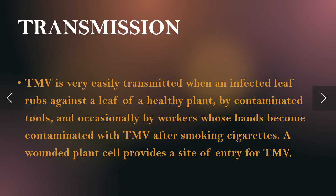Transmission: TMV is very easily transmitted when an infected leaf rubs against a leaf of a healthy plant, or by contaminated tools, and occasionally by workers whose hands become contaminated with TMV after smoking cigarettes. A wounded plant provides a site of entry for TMV.